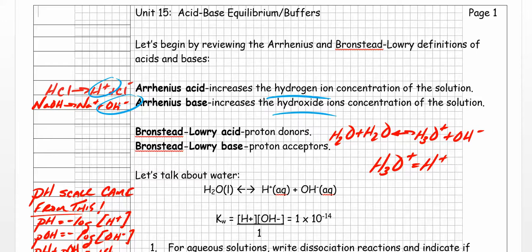I'll talk much more in detail about the Bronsted-Lowry definition in a while. But for right now, a Bronsted-Lowry acid is classified as a proton donor, and a Bronsted-Lowry base as a proton acceptor.